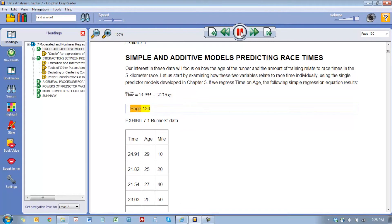Because it reads the entire equation out loud. Exhibit 7.1, Runners Data: time, age, mile, 24.9, 1, 29, 10.